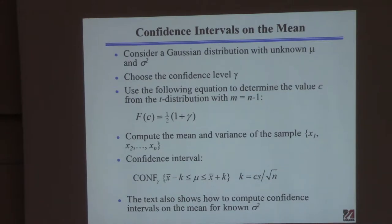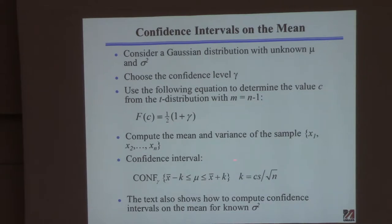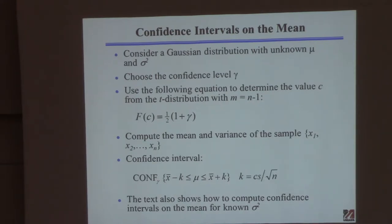Once you've got the value c, you're going to calculate the mean and variance. Take your samples, calculate the mean x̄, calculate the variance s-squared, and then compute the confidence interval. You calculate the value k: take the c value from the table, multiply by the standard deviation s (the square root of s-squared), then divide by the square root of n.